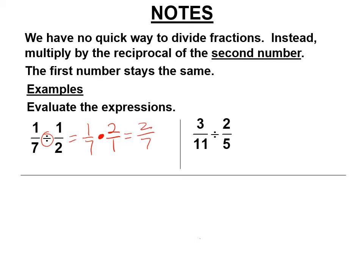3 11ths divided by 2 5ths. So you leave the first number. You multiply. You find the reciprocal. You flip it over. You look for canceling if you have it. We don't have any here. 3 times 5 is 15. 11 times 2 is 22. 3 11ths divided by 2 5ths is 15 22nds.